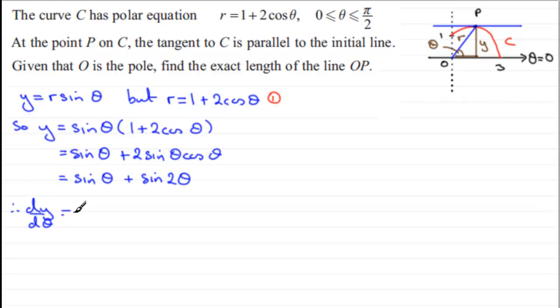dy by d theta. Differential of sine theta is cos theta and the differential of sine 2 theta is plus 2 cos 2 theta. Now what I know is that at P, we would expect y to be a maximum. In other words, the rate of change of y with respect to theta should in fact be zero at that point, at that maximum point.